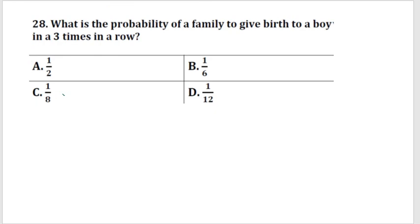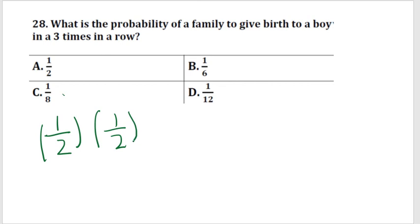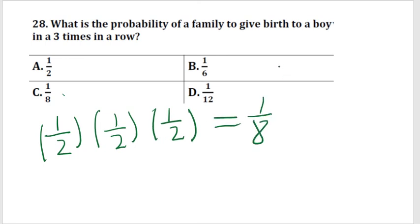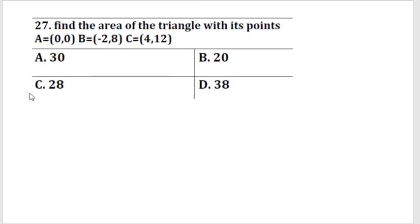The next question: what is the probability of a family giving birth to a boy three times in a row? In each chance, there is a one-over-two probability of getting a boy or a girl. For three times in a row, we multiply: (1/2) × (1/2) × (1/2) = 1/8. So the probability of getting a boy three times in a row is 1/8, and the answer is C.